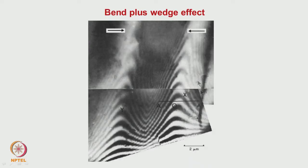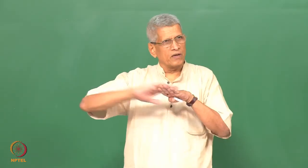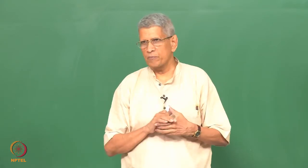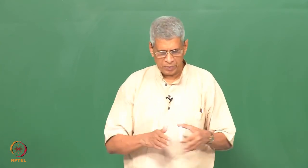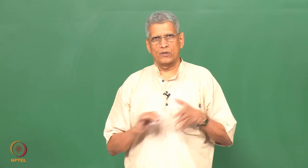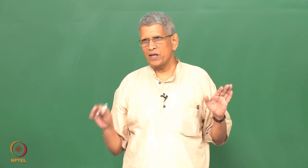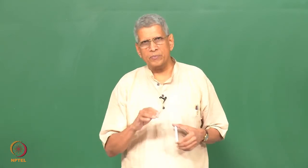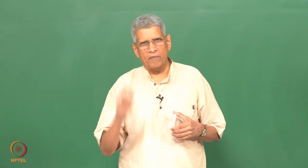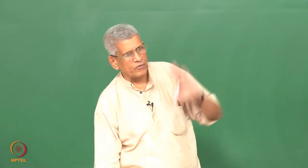Another example from the literature shows a wedge-shaped sample. When the sample is wedge-shaped, a fringe contrast will come, as explained, and in addition there is bending present too. Both effects are simultaneously present, and this is how the image will appear. When you look at a sample, unless it is perfectly flat and strain-free, you will not get ideal uniform intensity — there will be a lot of variation. There are new methods by which this sort of artifact could be avoided, which we will discuss in the last class.